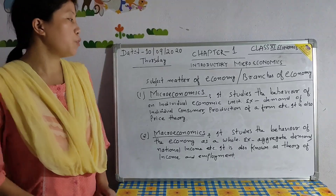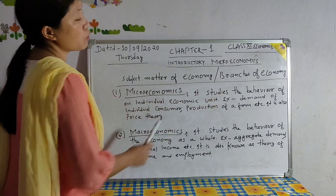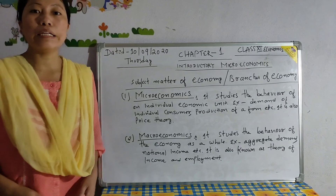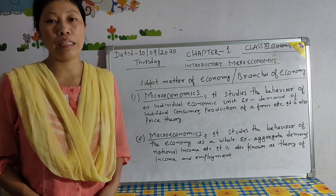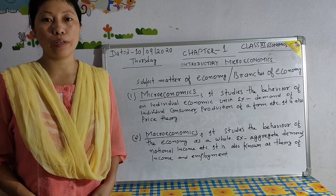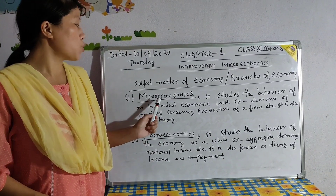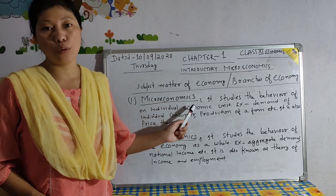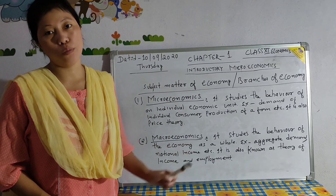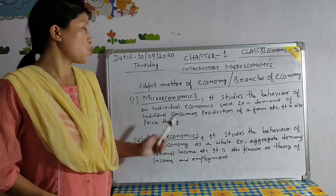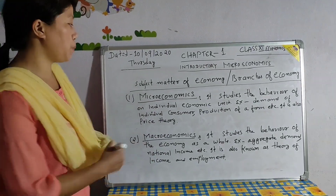Now, come to the next topic, that is the subject matter of economics, or branches of economics. There are two branches of economics: microeconomics and macroeconomics. In Class 11, we are going to study microeconomics theory, and in Class 12, you will study macroeconomics theory. So what is the meaning of microeconomics and macroeconomics? Let us see.